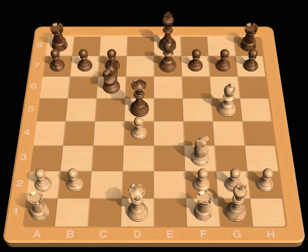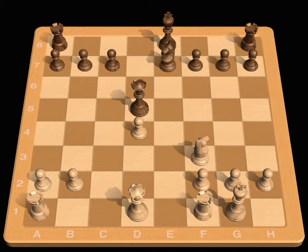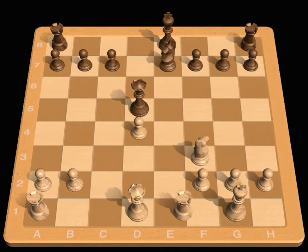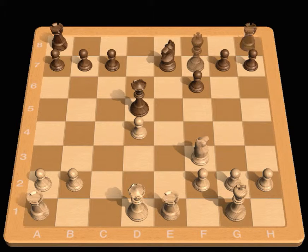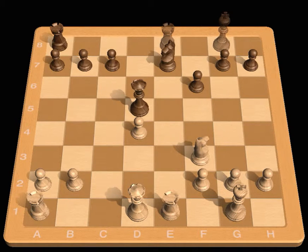Bd6, Knight takes e7, Rook e1, f6. Black hopes to castle by hand by soon playing King f7 followed by Rook e8 and then King g8. Black has also prevented Knight e5.